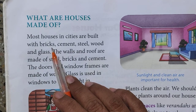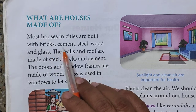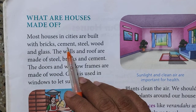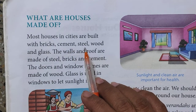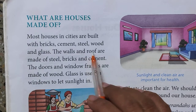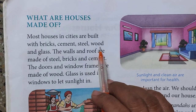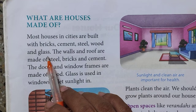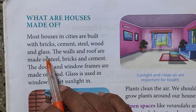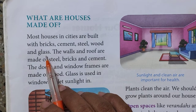Bricks are used to build the walls. Cement is used to patch up and make the plaster. Steel is used to put the concretes. Wood is used in making the furniture, doors and windows. Glass is used to cover up the windows in the form of glass panes.